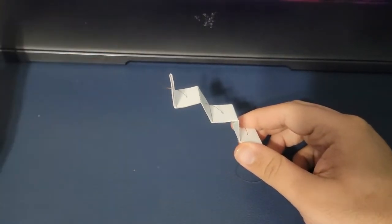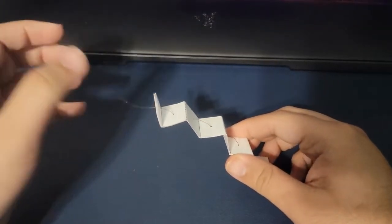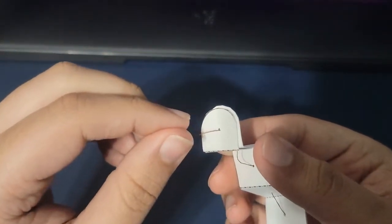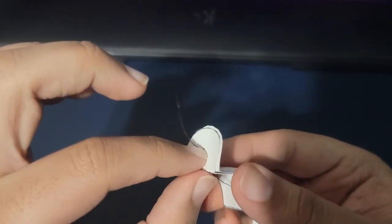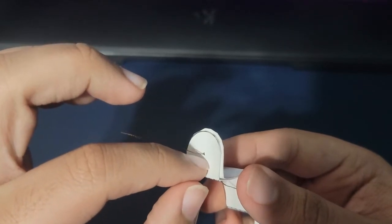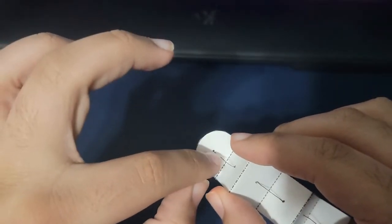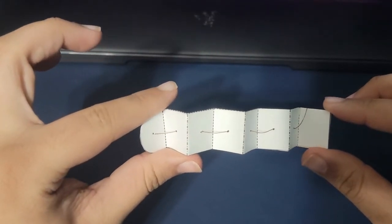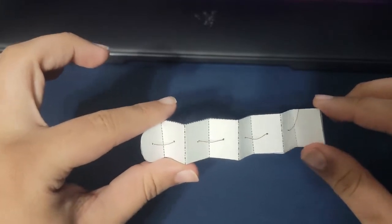Now the best way to secure this is to take some super glue and put a little drop right there and some on this side. So now you're going to want to repeat this exact process seven more times for the other arms.